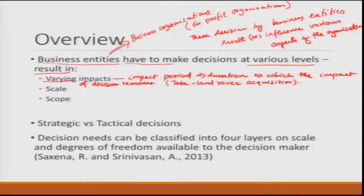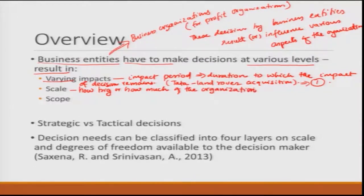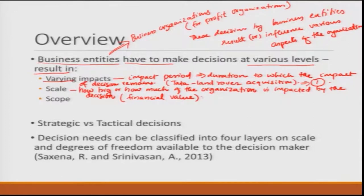The time period over which the impact of a decision happens is one of the most important points when discussing why business entities make decisions. The second aspect is about the scale of the decision — which means how big or how much of the organization is impacted by the decision. You can think about it as the financial value of the decision. For example, let us talk about GST versus state tax.